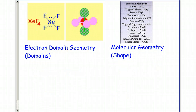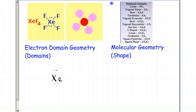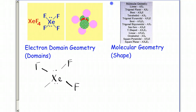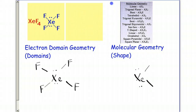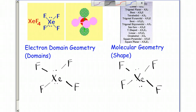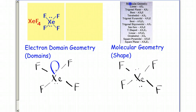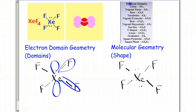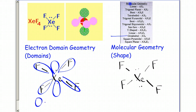This next one does have lone pairs on the center — two lone pairs, to be exact. Let me draw the Lewis structure first. We'll start with the electron domain geometry. We have two lone pairs on the center, which each are domains, so that's two domains, then three, four, five, six. This one has six domains, so it's going to be labeled octahedral.